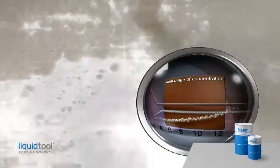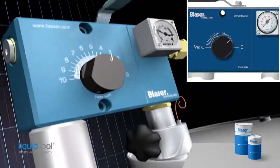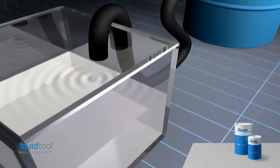To correct low concentrations, the top-up concentration must be increased. If there is not enough space in the sump, some of the low-concentration emulsion must first be removed.